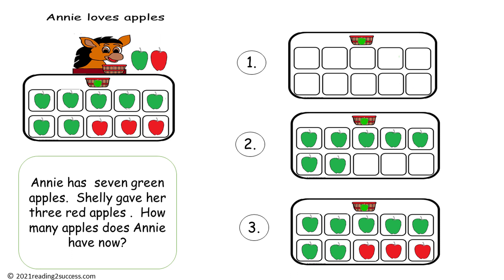Let's look at the three steps. The first step is to begin with a blank 10 frame. The second step is to place 7 green apples on the 10 frame. The third step is to place 3 red apples on the 10 frame. This shows that 7 green apples plus 3 red apples equals 10 apples. So, to answer the question, how many apples does Annie have now? She has 10 apples.